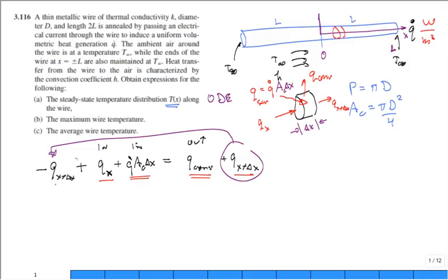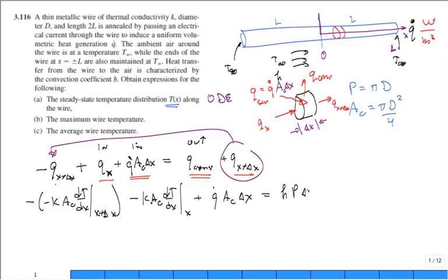This is the convection off the surface, and that's the heat generation coming in. To save space, I'm going to put minus Q at X plus delta X over here. And now we apply Fourier's law. So you have minus K A sub C dT/dx at X plus delta X. And then we're going to have minus K A sub C dT/dx at X plus Q dot A sub C delta X equal to, for the convection, H times the perimeter times delta X times T minus T infinity.